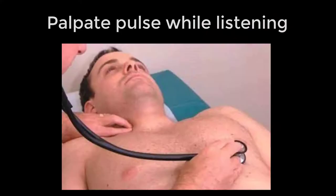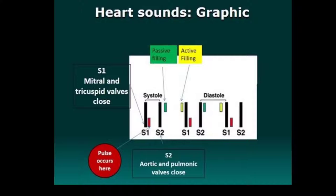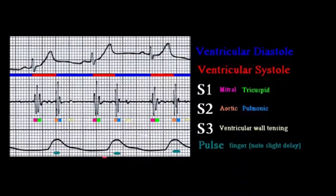For this reason, it is important to always palpate the point of maximal impulse or the carotid pulse when auscultating. It is important that you always palpate either the PMI or the carotid pulse when auscultating. The heart sound that you hear when you first feel the pulse is S1.